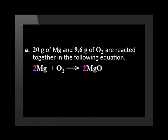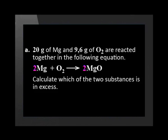So we have seen in this worked example how we use the mole ratio in an equation to determine which substance is in excess and which substance is the limiting reagent. Let us do another example. Part A of the question says: 20 grams of magnesium and 9.6 grams of oxygen are reacted together in the following equation. Let us calculate which of the two substances is in excess.